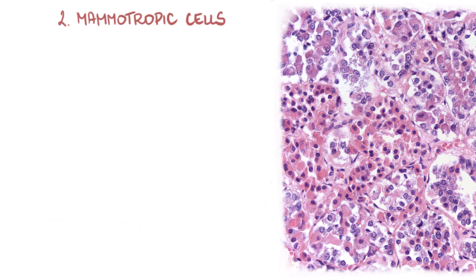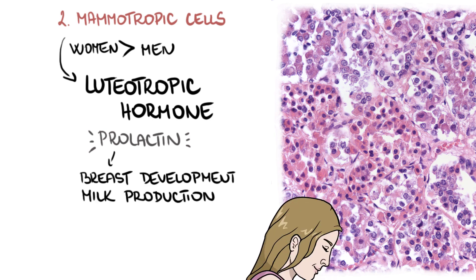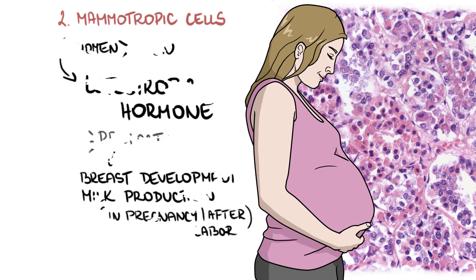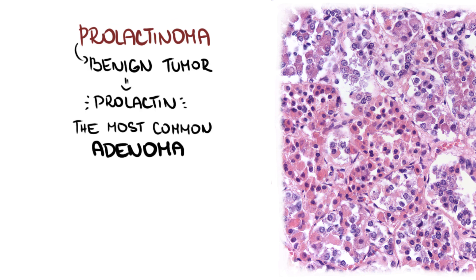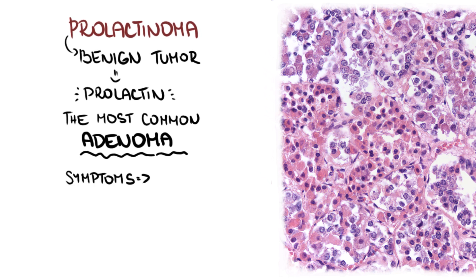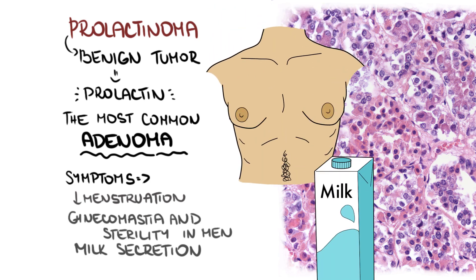Mammotropic cells are more numerous in women but are also present in men. They secrete luteotropic hormone, which is usually called prolactin. This hormone is responsible for breast development and milk production in pregnancy and after labor. Prolactinoma, which is a benign tumor producing prolactin, is the most common adenoma of the hypophysis. Symptoms of prolactin overproduction involve absence of menstruation in women, gynecomastia and sterility in men, and milk secretion may occur in both genders.